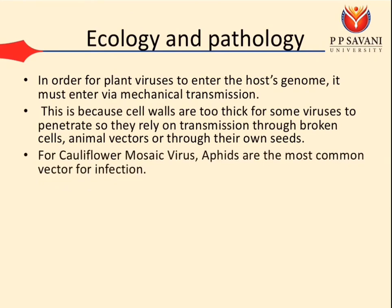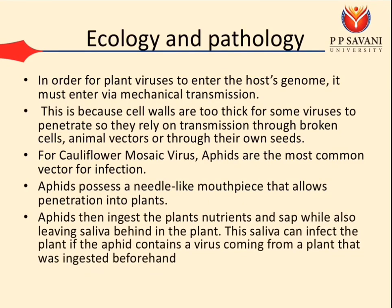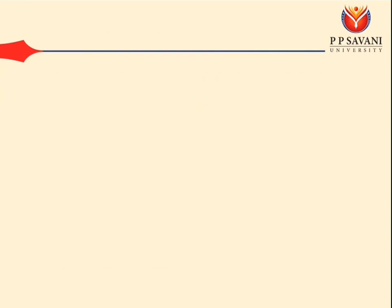For Cauliflower Mosaic Virus, aphids are the most common vector for infection. Aphids possess a needle-like mouthpiece that allows penetration into plants. Aphids then ingest the plant nutrients and sap while also leaving saliva behind in the plant. This saliva can infect the plant if the aphid carries a virus acquired from a previously ingested plant.